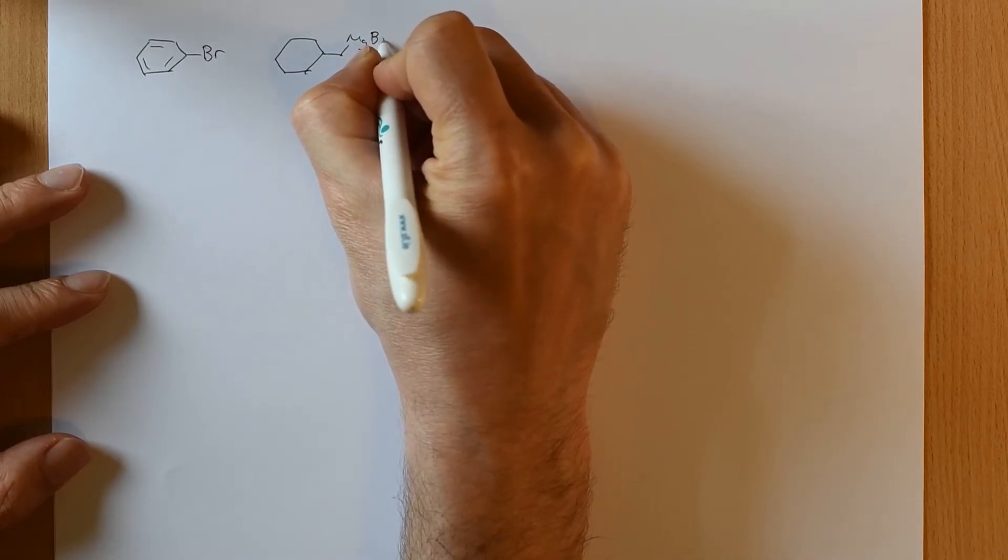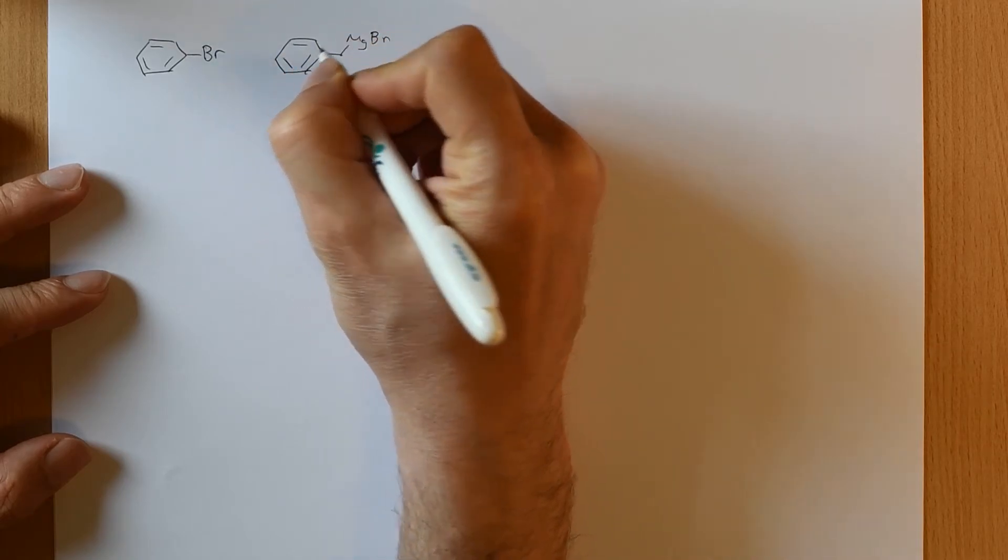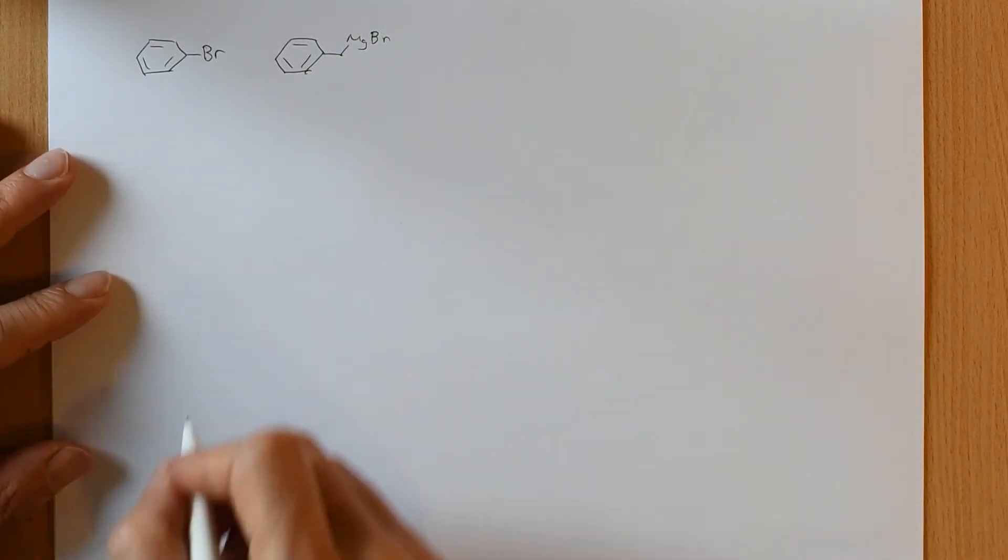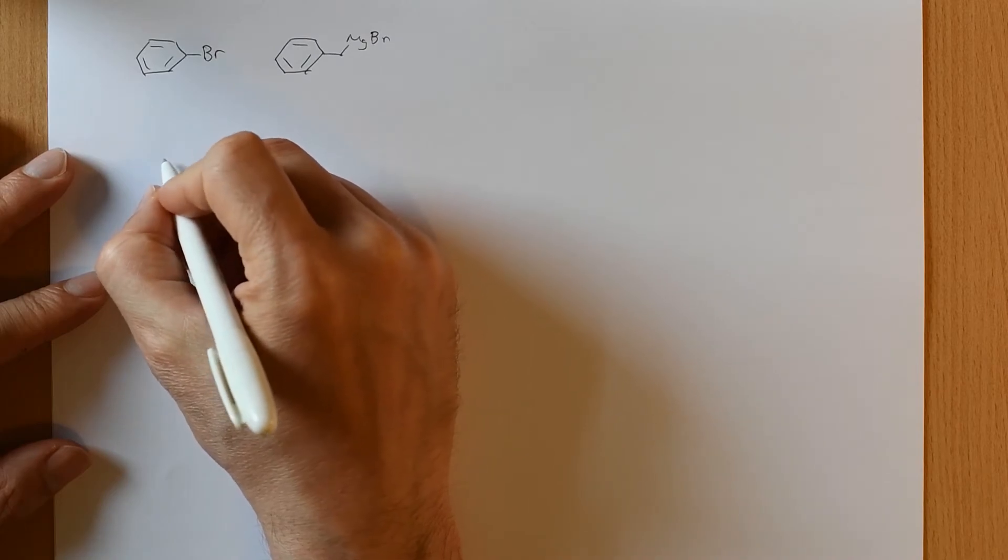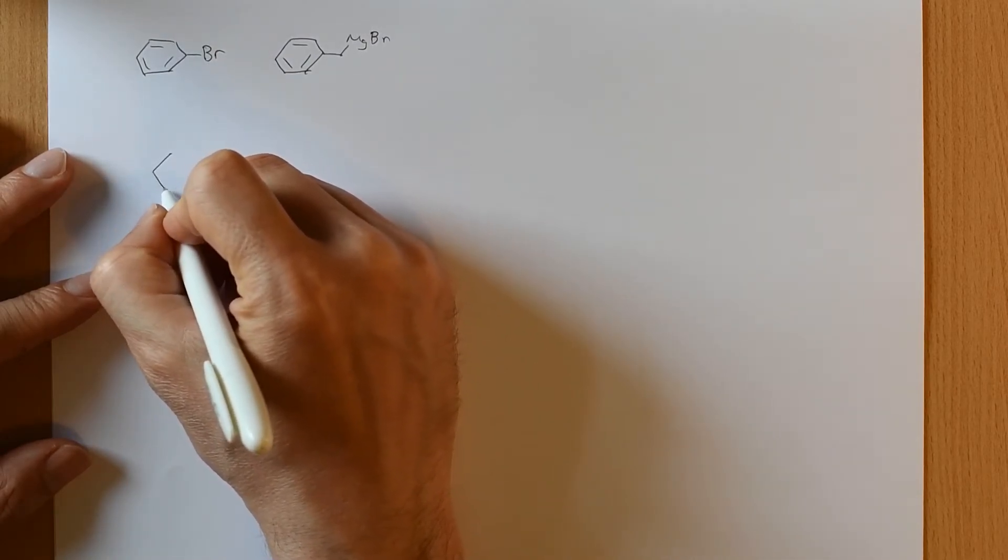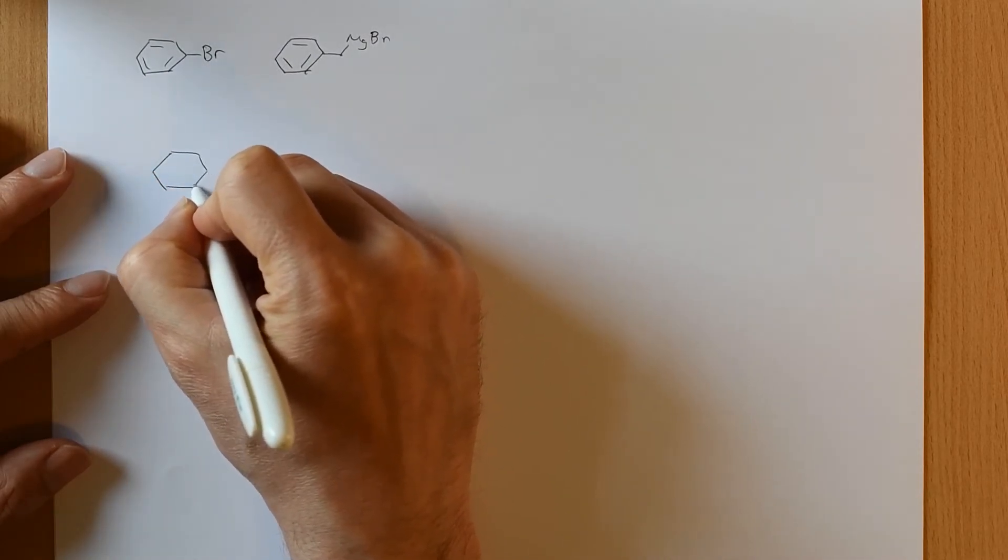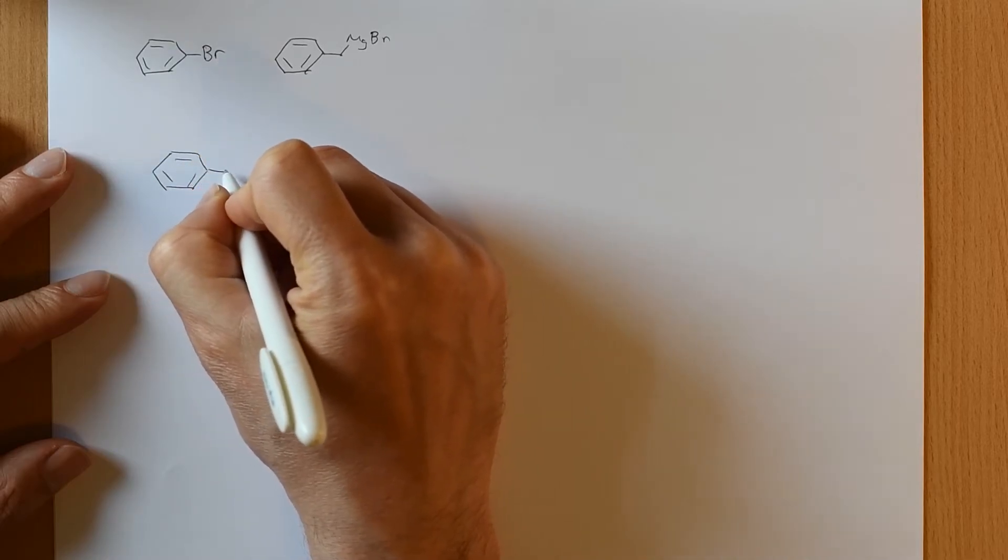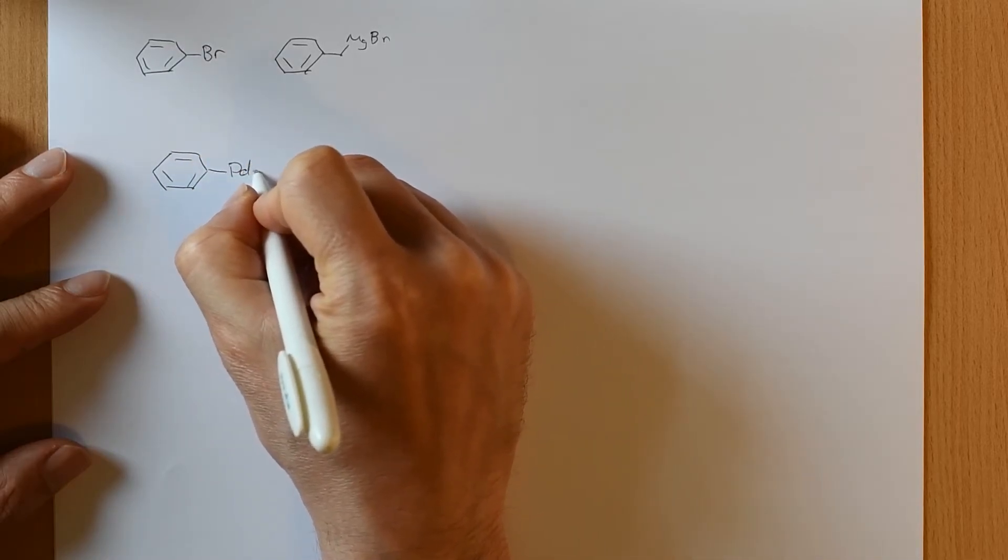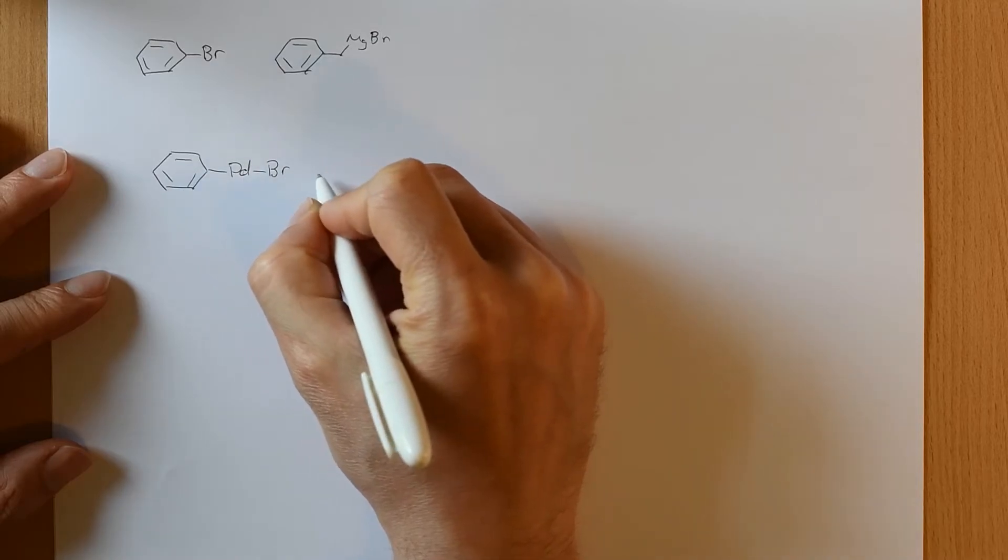And now if we take our Grignard reagent, in this case benzyl-magnesium-bromide, then we can draw out the coupling reaction between these two things. So the first thing that's happening here is that oxidative insertion. I'm going to draw it as already having happened.